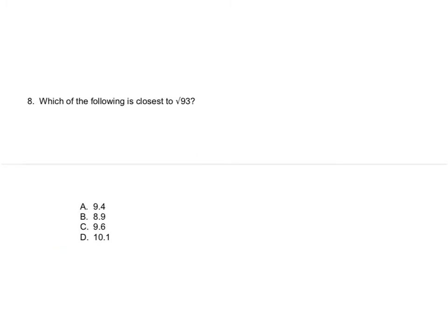Which of the following is closest to the square root of 93? Plug it into your calculator: the square root of 93 equals approximately 9.6436. All answer choices are rounded to the nearest tenth. Looking at the digit after the tenths place, that 4 does not round it up, so we get 9.6, which gives us answer C. Remember: 5 or more, add one more; 4 or less, it stays.